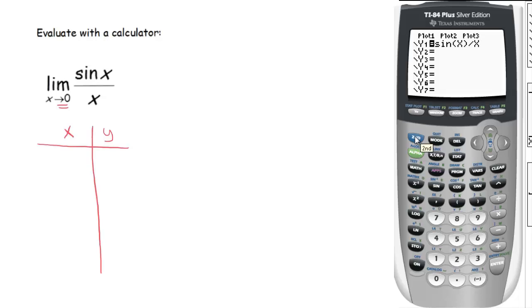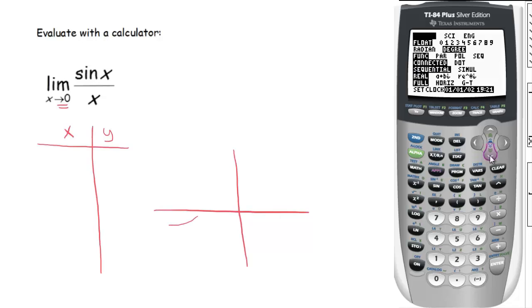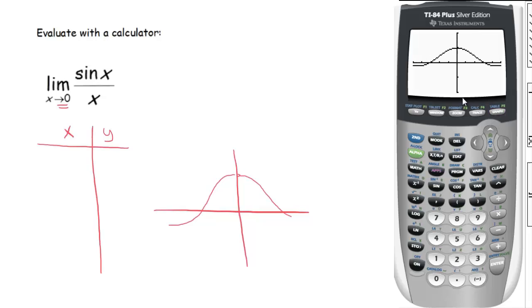Let's make our window with x min and x max maybe like negative 5 to 5, and the y min and y max, how about like negative 2 to 2. Let's see if that works. I just want to make a quick sketch of what this looks like.